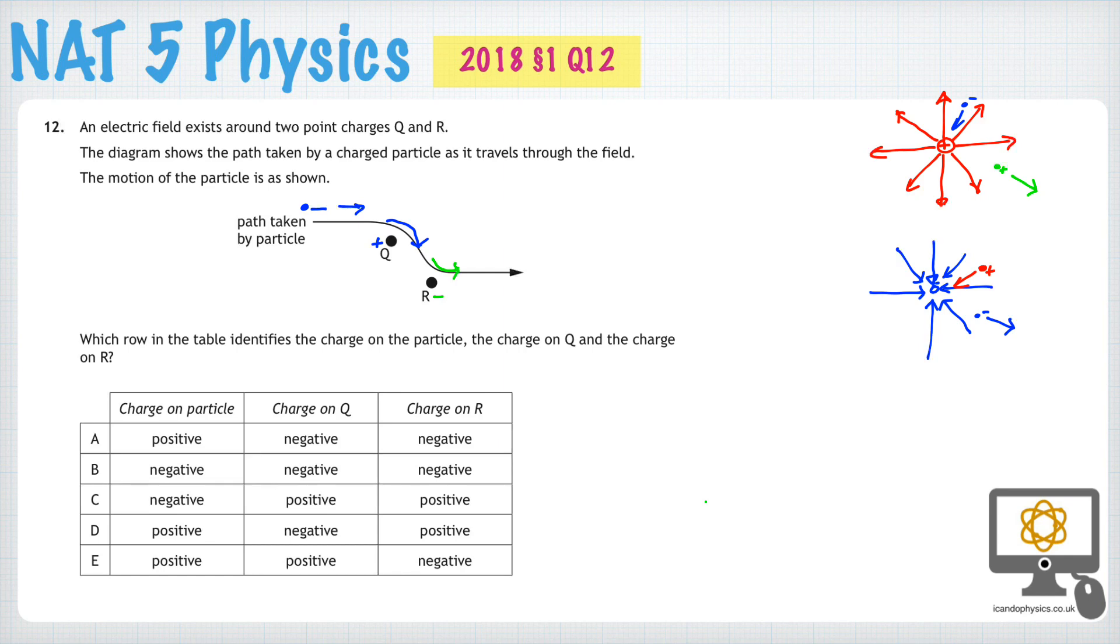We need to look at our table now and see, is there a combination where the particle itself is negative, Q is positive, and R is negative? When we look down, B has the charged particle is negative, but the rest aren't correct.